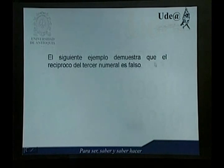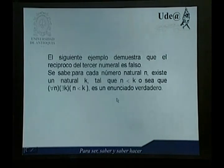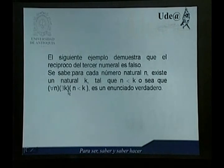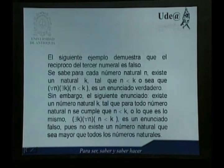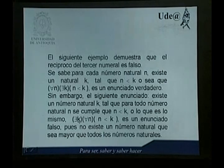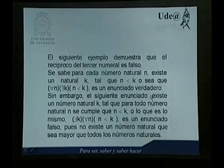El siguiente ejemplo demuestra que el recíproco del tercer numeral es falso. Se sabe que para cada número natural N existe un natural K tal que N menor que K; o sea, es verdadero que para cada N existe un K tal que N es menor que K. Sin embargo, el enunciado existe un número natural K tal que para todo número natural N se cumple que N menor que K, es decir, existe un K tal que para todo N N menor que K, es un enunciado falso. Pues no existe un número natural que sea mayor que todos los números naturales; es decir, los números naturales no son acotados superiormente.